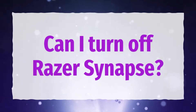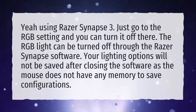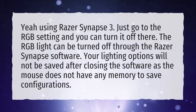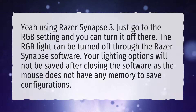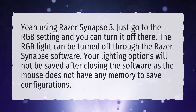Can I turn off Razer Synapse? Using Razer Synapse 3.0, just go to the RGB setting and you can turn it off there. The RGB light can be turned off through the Razer Synapse software. Your lighting options will not be saved after closing the software, as the mouse does not have any memory to save configurations.